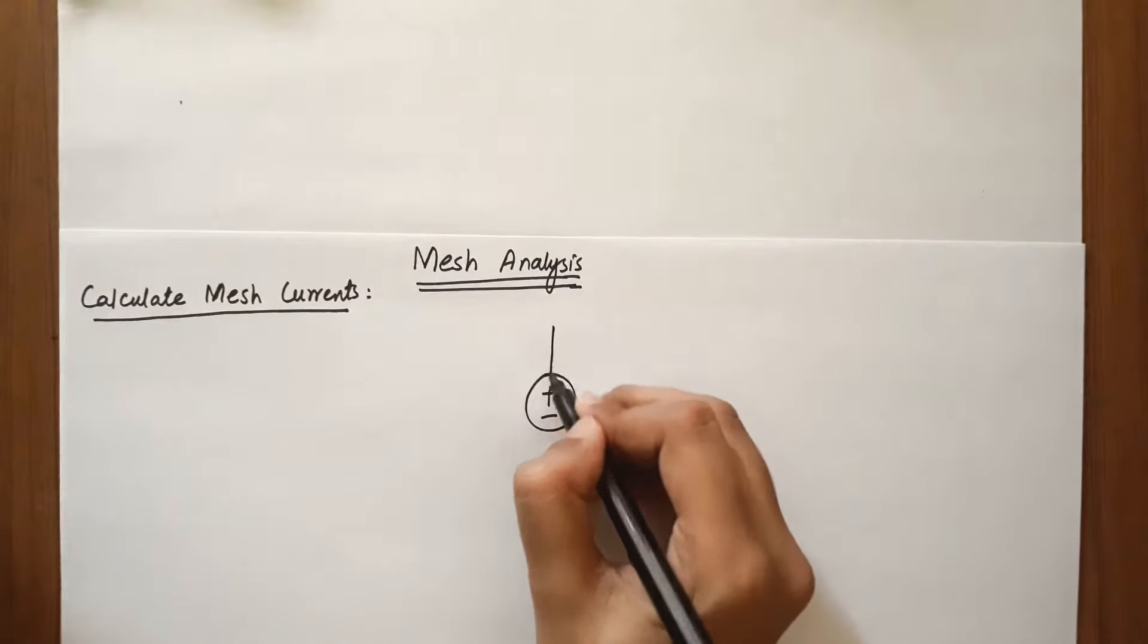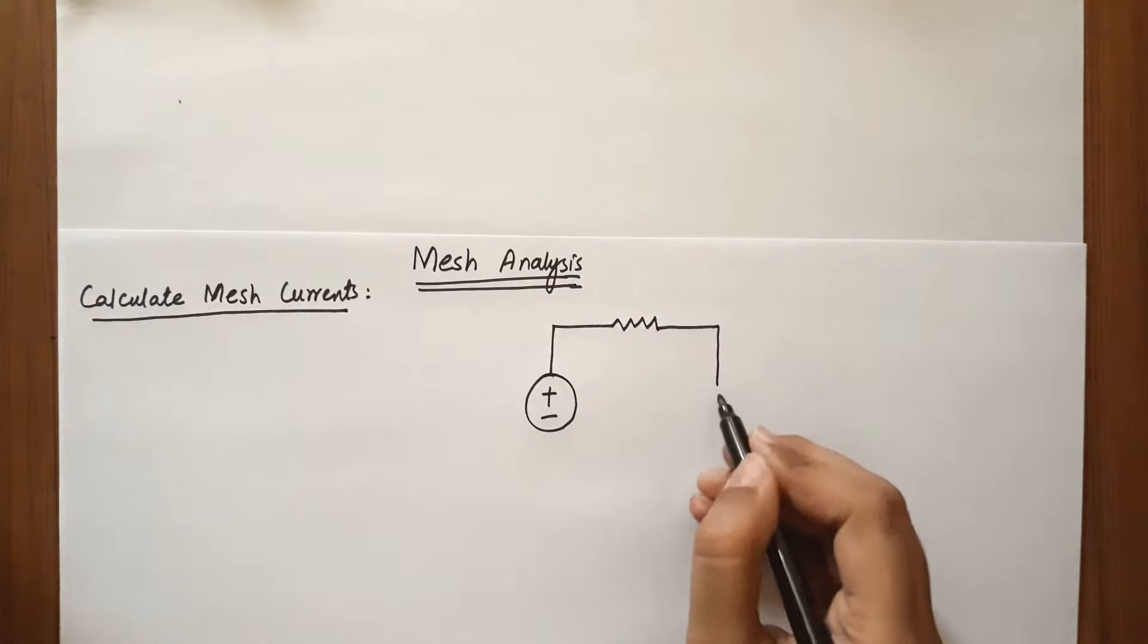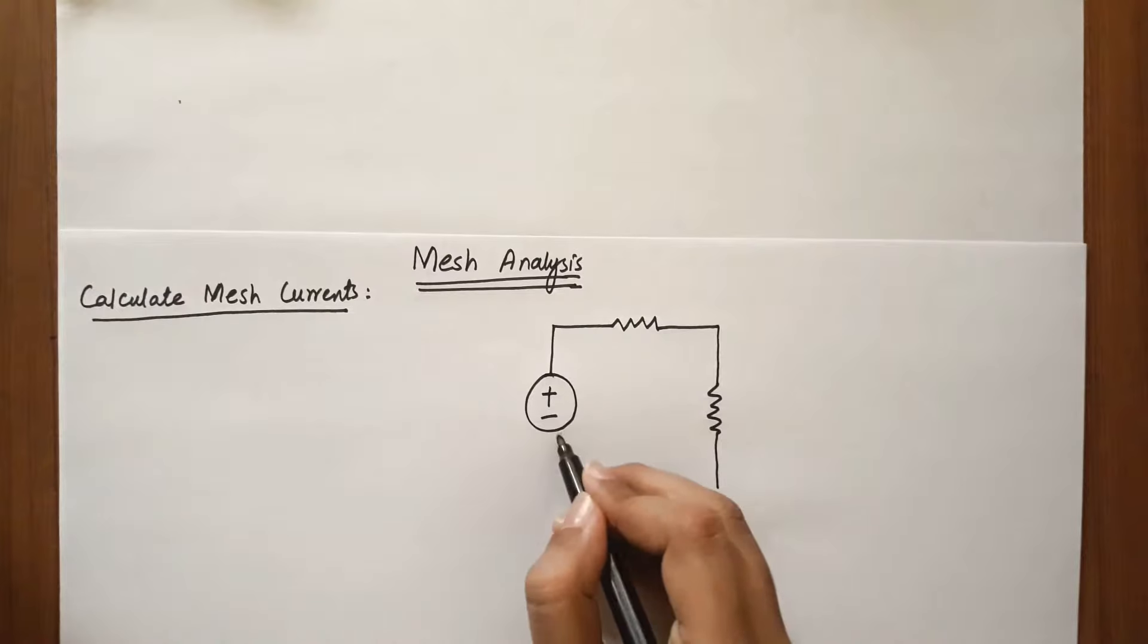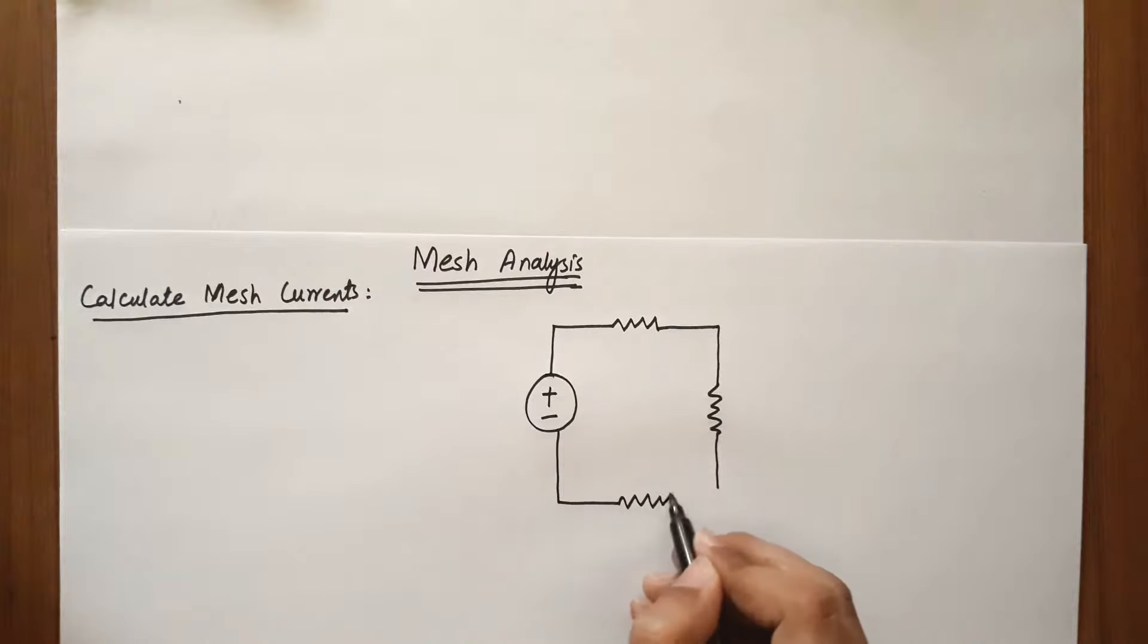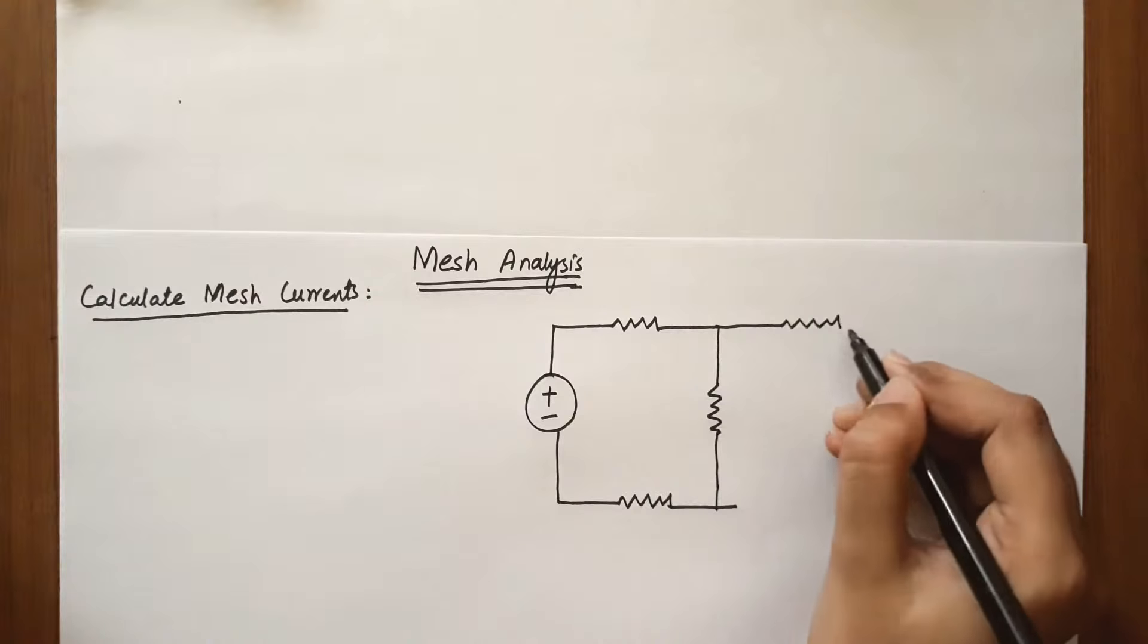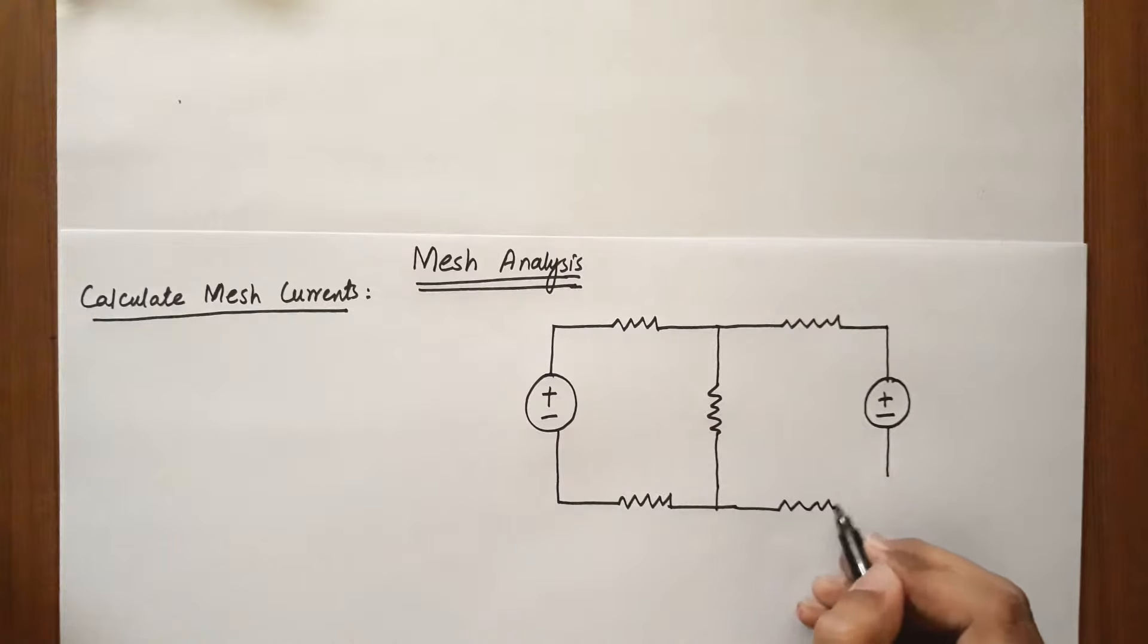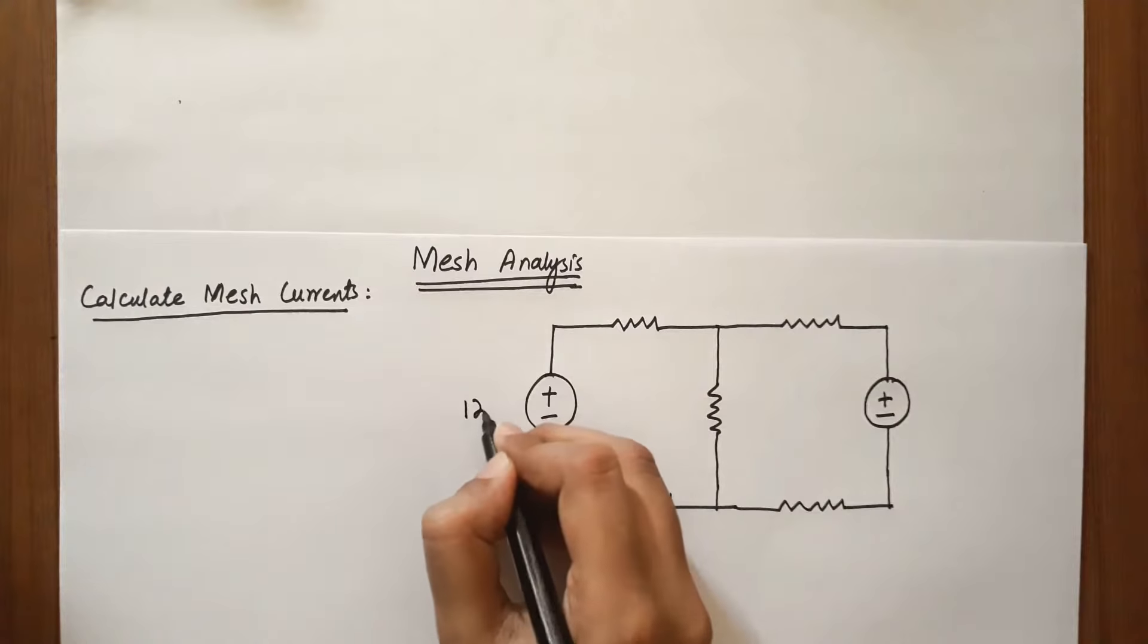Let's draw the circuit first. Mesh analysis is a systematic application of Kirchhoff's voltage law, so we will take voltage sources and not current sources. In the next video, we will solve mesh analysis with current sources, but in this video, we will use simplicity and convenience for better understanding.